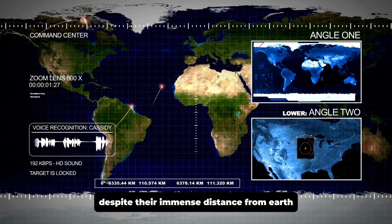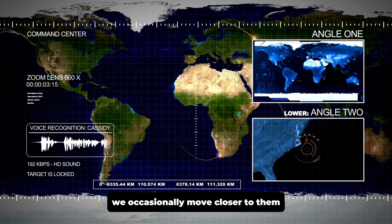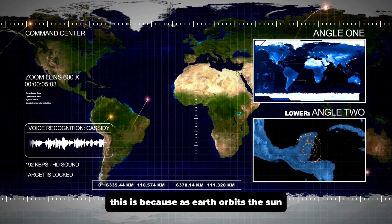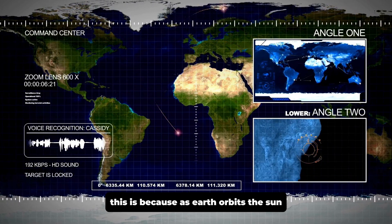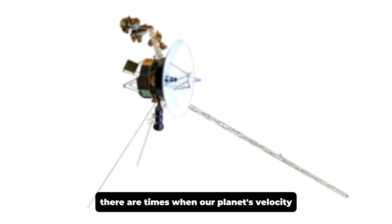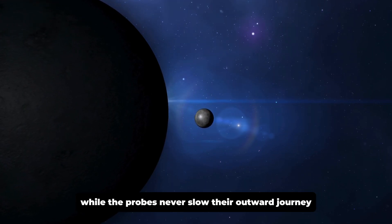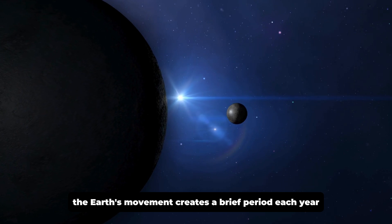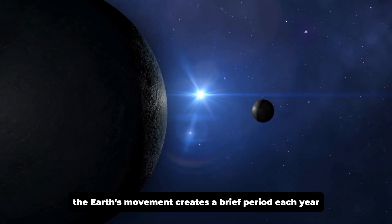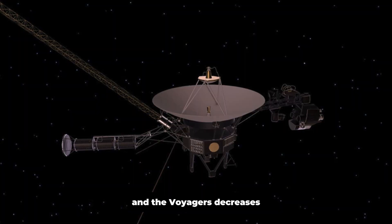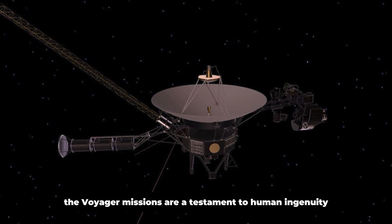One fascinating fact about the Voyager mission is that, despite their immense distance from Earth, we occasionally move closer to them. This is because, as Earth orbits the sun, there are times when our planet's velocity toward the spacecraft temporarily exceeds their velocity away from us. While the probes never slow their outward journey, the Earth's movement creates a brief period each year when the distance between us and the Voyagers decreases.